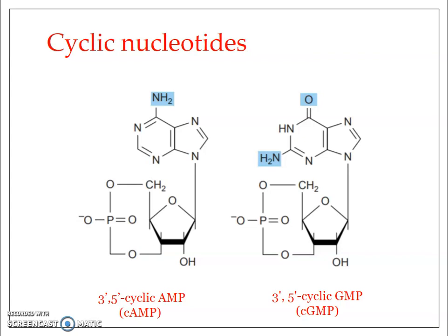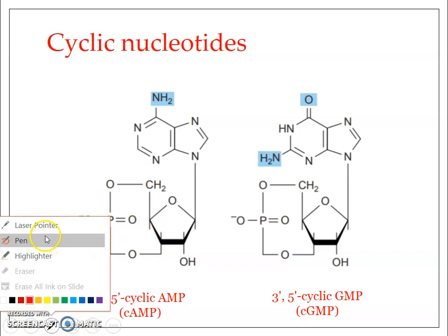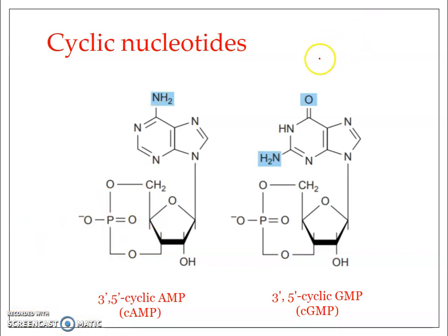Hormones and neurotransmitters are considered primary messengers, but some of these primary messengers may not be able to enter the cell where they need to bring about their effect. In that case, the message has to be carried from outside the cell into the deeper parts of the cell — and this is done by second messengers such as cyclic AMP or cyclic GMP. These molecules are formed intracellularly with the help of enzymes generally referred to as cyclases, which are present in the plasma membrane.